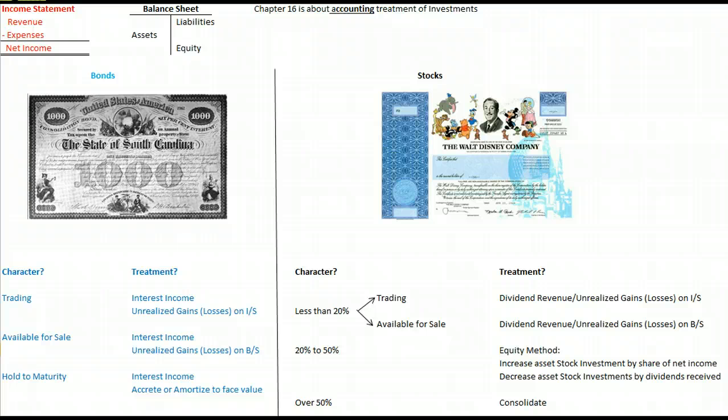We increase our stock investment by our share of net income. If we own 30% of a company, let's say, and they make $100,000 during the year, we're going to increase our asset by our share of that.